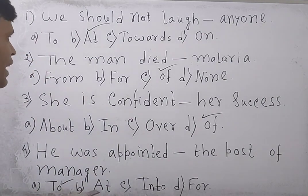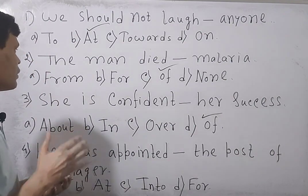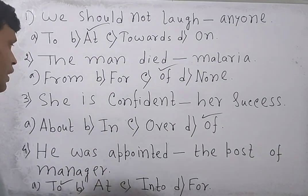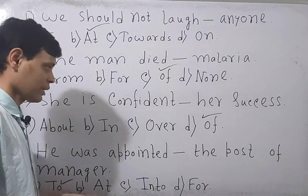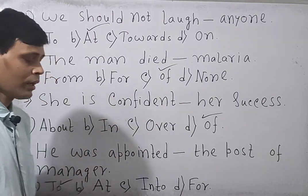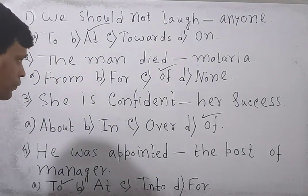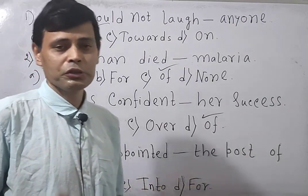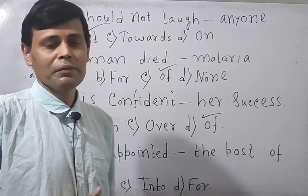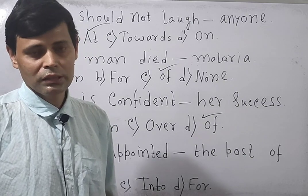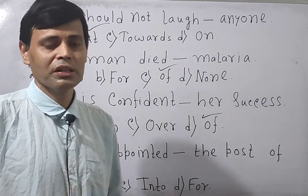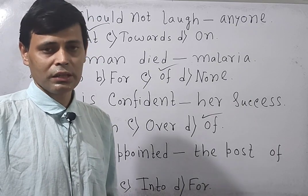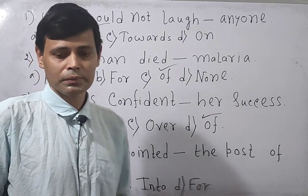Let's look through the overall class. The first answer is 'at,' the second answer is 'of' for a disease, the third answer is 'off,' and the last answer is 'to.' That's my short class on prepositions. If you are unable to understand any part, feel free to drop your queries in the comment box. Keep waiting for my next class. Till then, have a very good day.